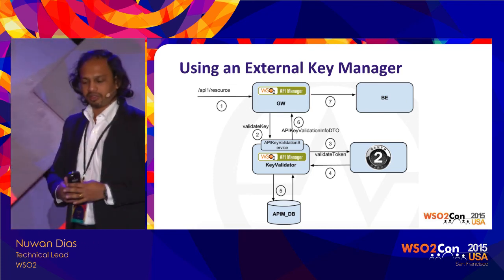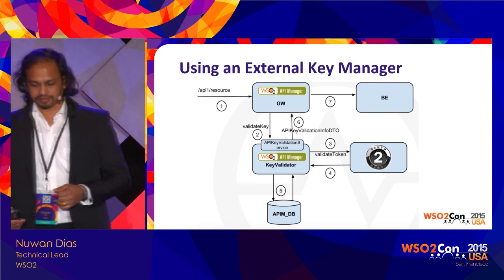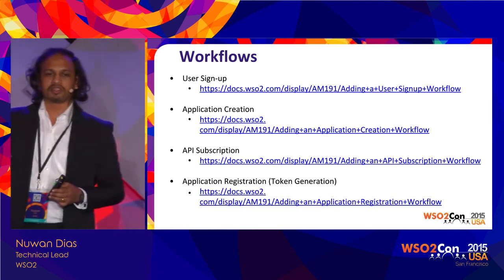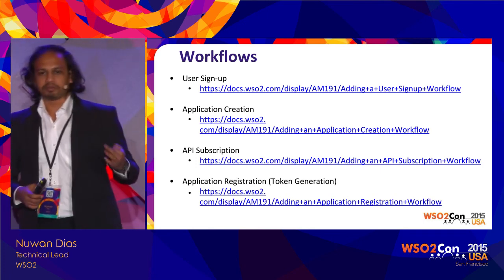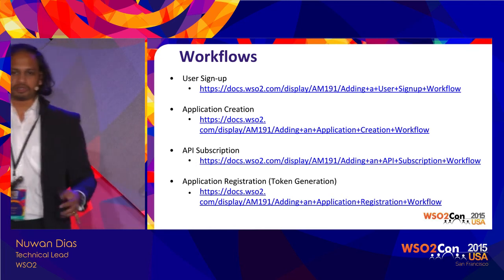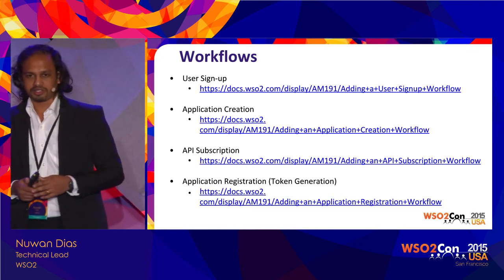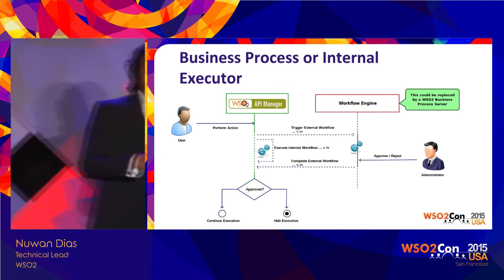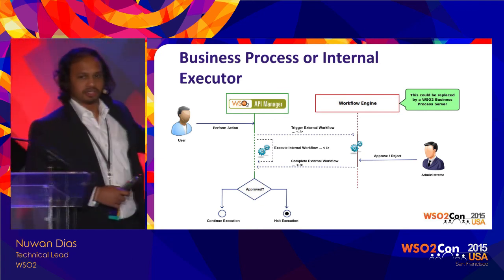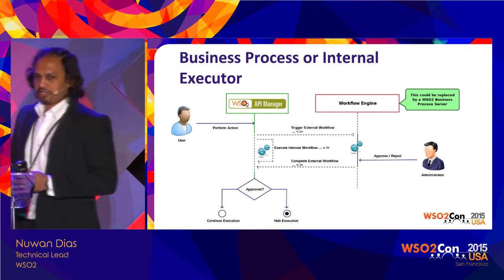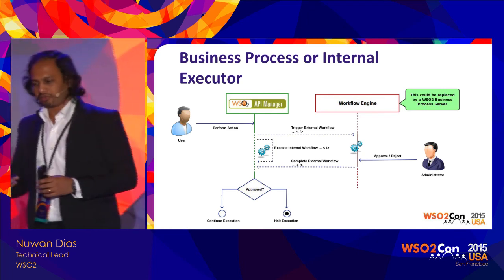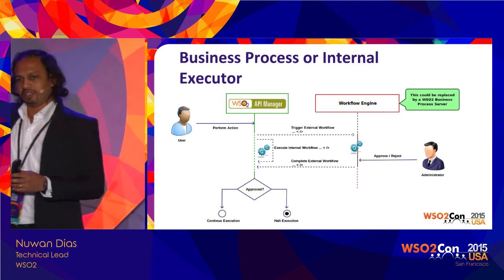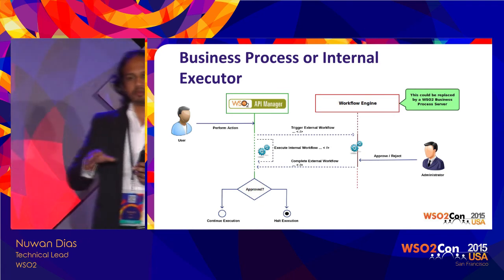Moving into workflows: on the API Store there are capabilities for plugging in different workflows or controlling different user actions. Some of these are user sign-up, application creation, API subscription, and key generation. You can plug in different controls for these user actions. These workflows are an extensible mechanism — we have a class for each workflow called a workflow executor. The workflow executor sits on the API Store and is the one triggering all these workflows.